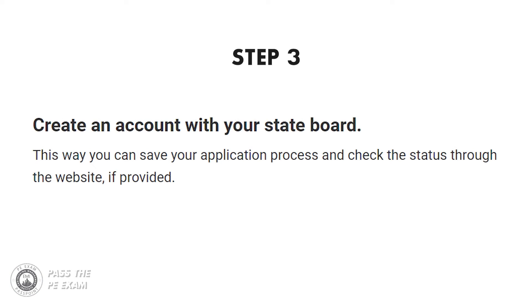Step three: create an account with your state board. Creating an account with your state board is an option in some states. Doing this, if an option, will allow you to save your application progress and check the status through the state's website, making the process easier. The biggest benefit is that it makes it easier to work on the application little by little, as opposed to having to tackle it all in one sitting.